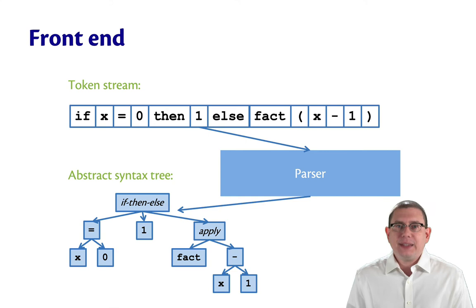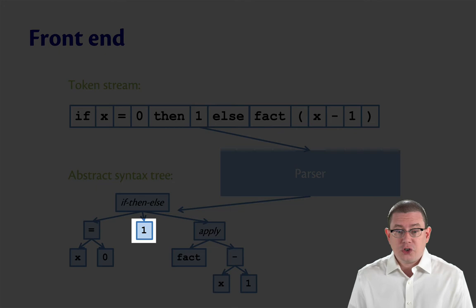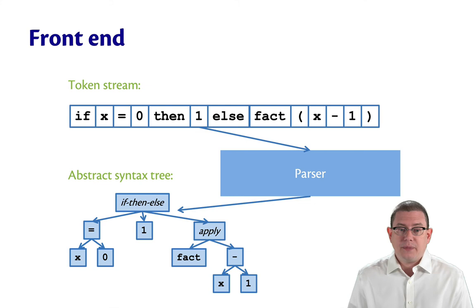And that tree shows the kind of hierarchical ordering of the program. This program is an if-then-else expression, and so we have a node at the top of the tree that represents if-then-else. And we have three subtrees. One for the guard, one for the then branch, and one for the else branch. And each of those has some structure as well. In the guard, we're using a binary operator to compare two sub-expressions. In the else branch, we're using a function application, and that has a particular function fact that's being applied to a sub-expression. That sub-expression involves subtraction.